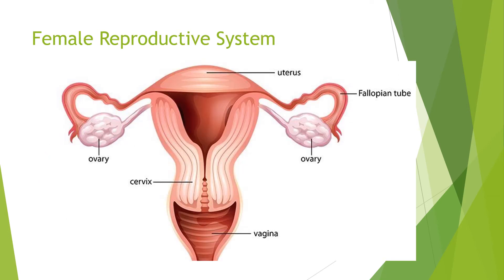Now that we are done discussing the male reproductive system, let us discuss the female reproductive system and its parts. First, we have the ovaries — we have two ovaries, and their function is to produce egg cells. Next is the fallopian tube, also known as the oviduct. It serves as a passageway for eggs from the ovary to the uterus, and is also the site of egg fertilization — the pathway for the egg produced in the ovary going to the uterus.